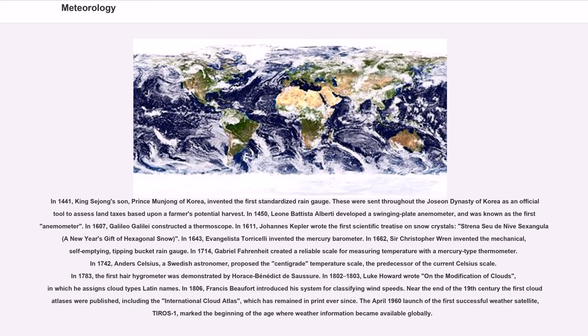In 1783, the first hair hygrometer was demonstrated by Horace-Bénédict de Saussure. In 1802 to 1803, Luke Howard wrote on the modification of clouds, in which he assigns cloud types Latin names. In 1806, Francis Beaufort introduced his system for classifying wind speeds. Near the end of the 19th century the first cloud atlases were published, including the International Cloud Atlas. The April 1960 launch of the first successful weather satellite, TIROS-1, marked the beginning of the age where weather information became available globally.